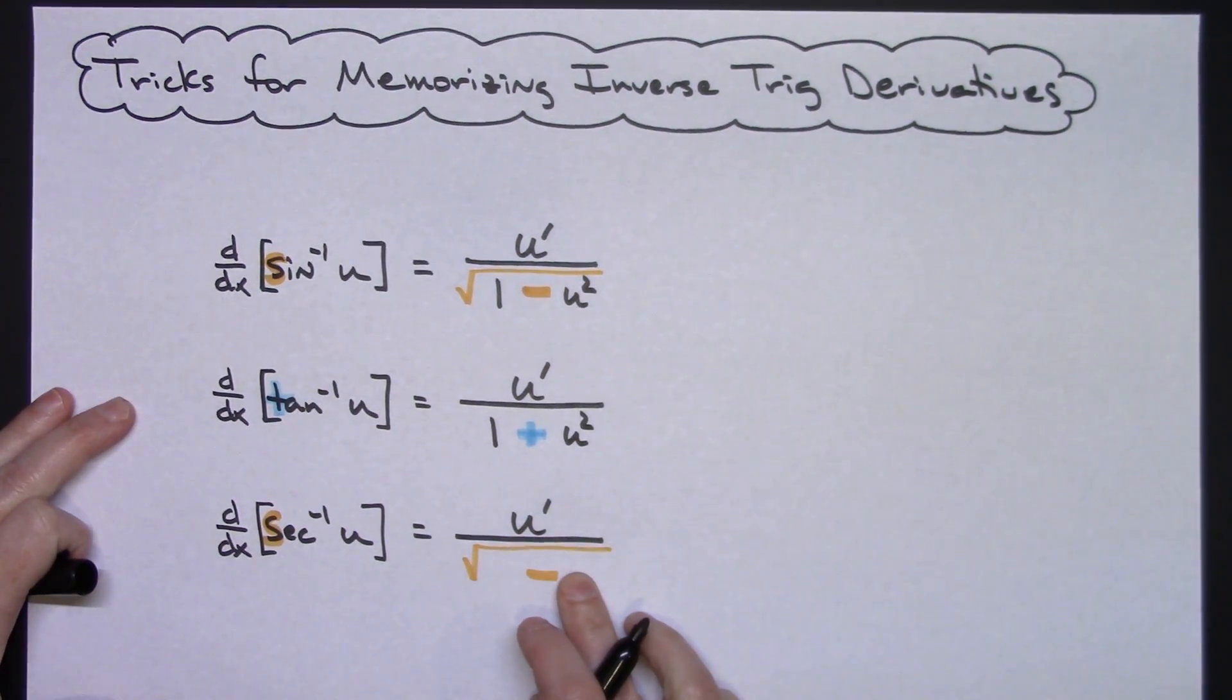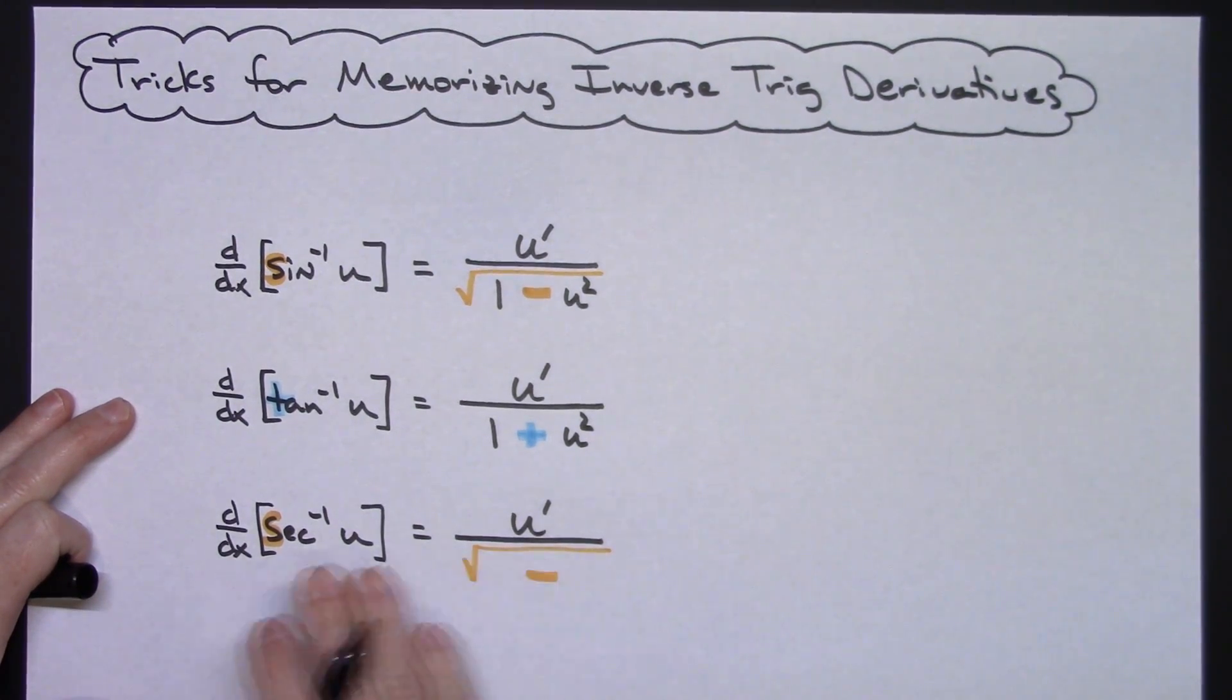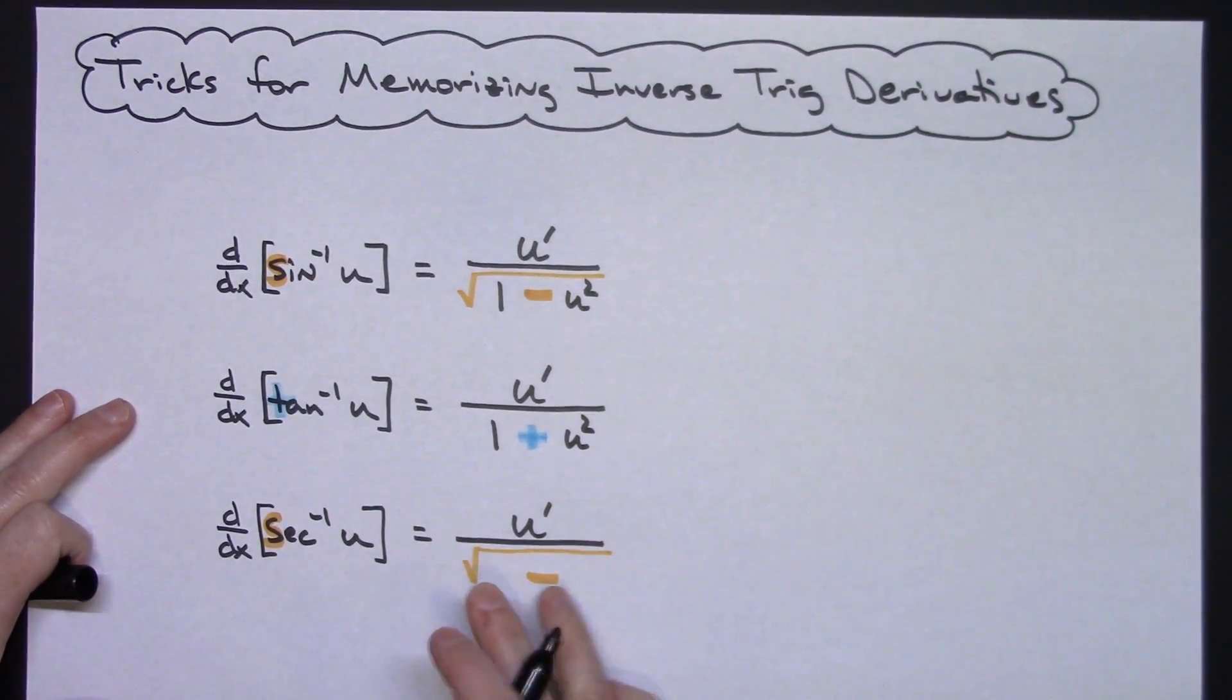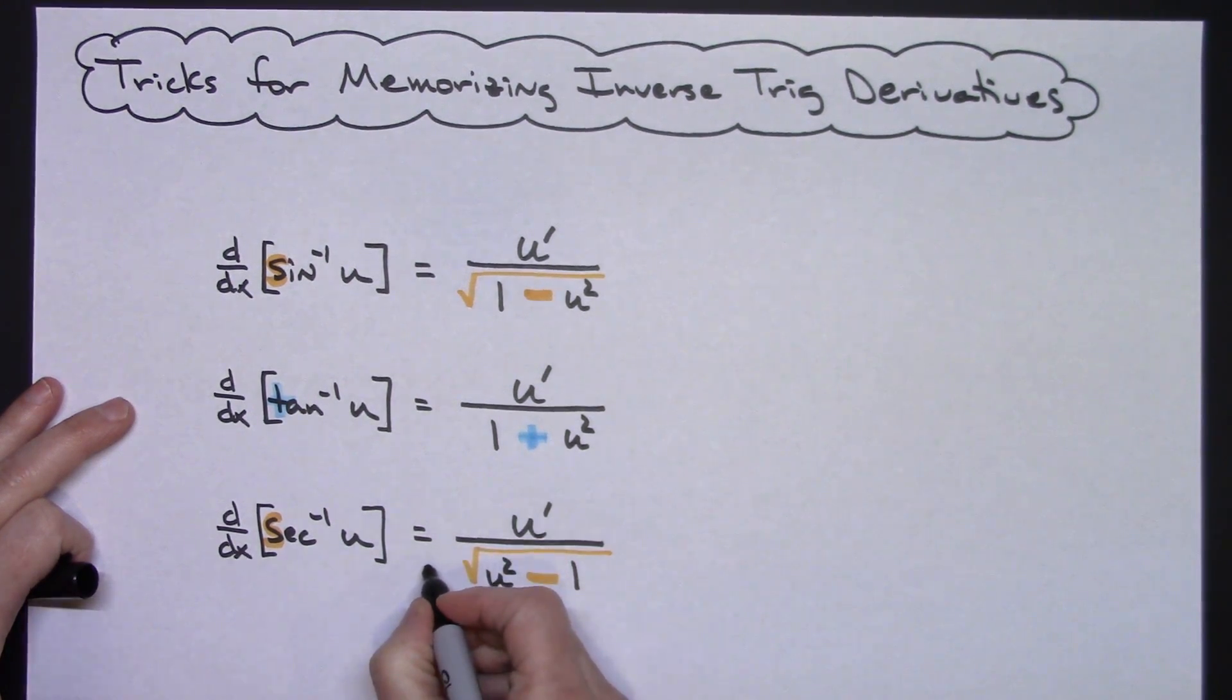And then for this last one, this guy you just are going to have to remember the secant guy is the oddball, so then it is switched. So U squared here and one here, and this is an oddball, really is an oddball, so then you've got to remember to do the absolute value of U there out in front - him being the oddball right there.